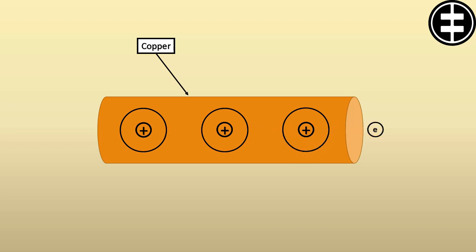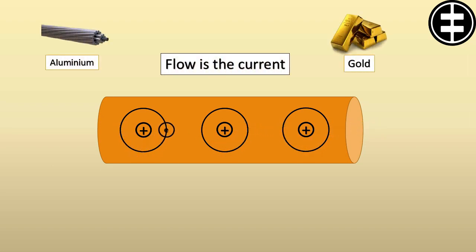This electron movement creates a flow, which is known as electric current, in aluminum, gold, and many other materials.